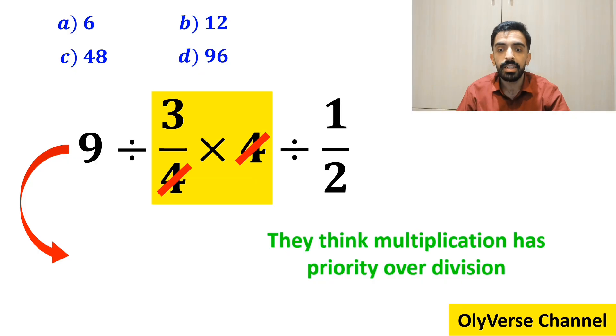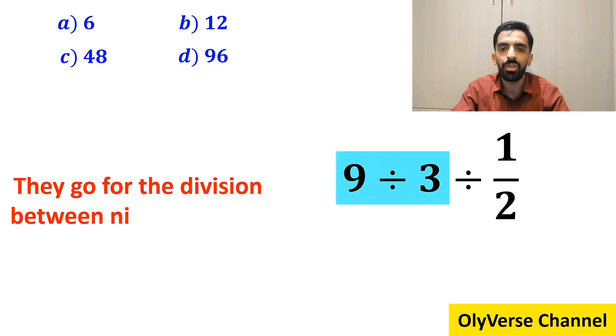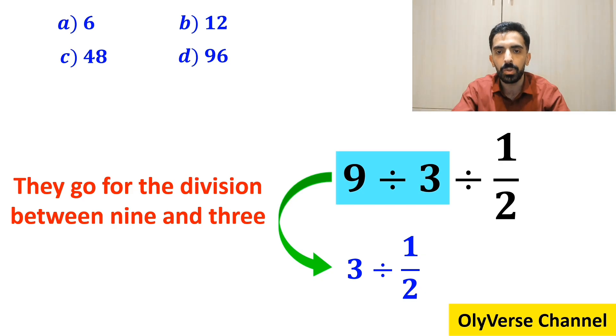So, this expression simplifies to 9 divided by 3 then divided by 1 over 2. In the next step, they go for the division between 9 and 3, and rewrite this expression as 3 divided by 1 over 2, which finally gives them the answer 6.